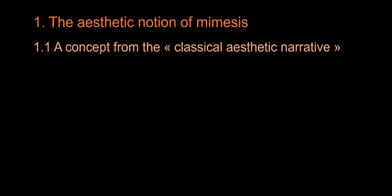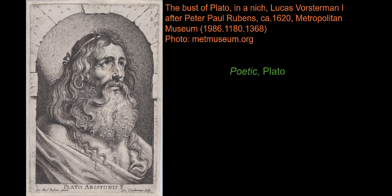But before seeing some of those objects, let's go back to the notion of mimesis. The notion of mimesis, in an aesthetic sense, appears first in the Poetics by Plato. The author uses this term to describe the ability of literary works to imitate nature and the living world. Regarding visual culture, the notion of mimesis is also used to describe the ability of an image to render and imitate nature and the living world.